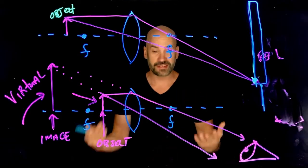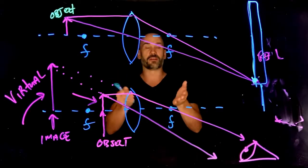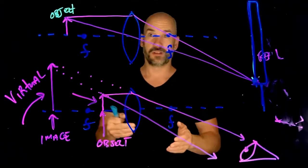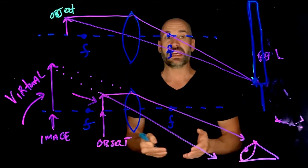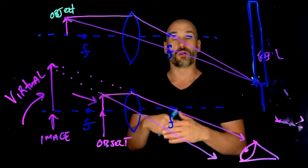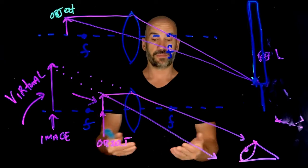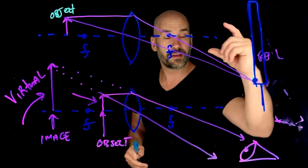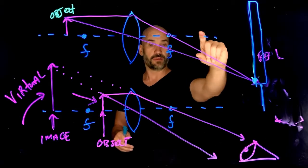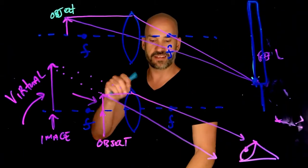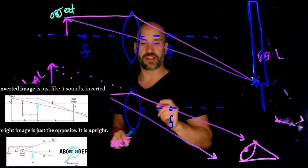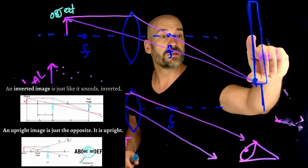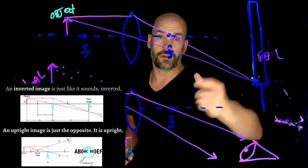And that brings us to the next dichotomy or category of images. And that is erect or upright and inverted. So it turns out that real images, and you can go to the next slide here that says the difference between inverted and upright images, real images are always inverted.